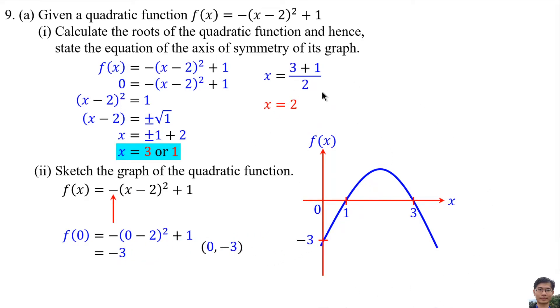This is the answer. For your information, x equals 2 is the axis of symmetry. It means this straight line. The left part of the axis of symmetry is the same as the right part of the axis of symmetry. We can find the maximum value. Substitute 2 to x to get 1. The coordinate of the maximum value is 2, 1.